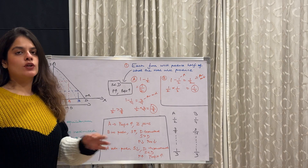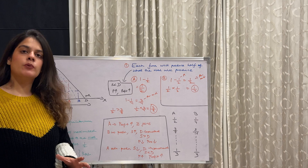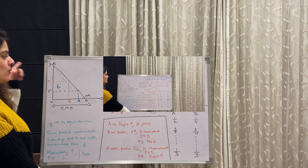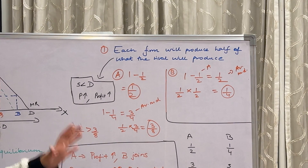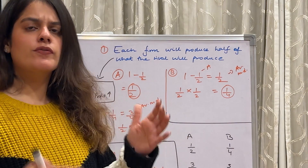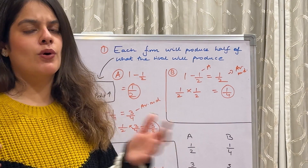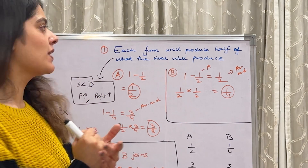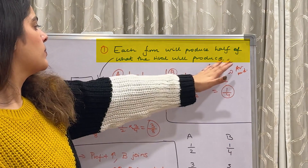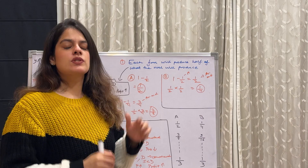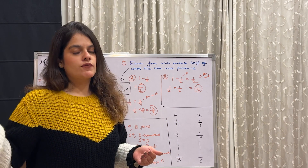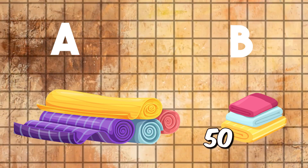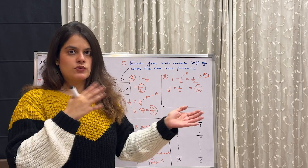Now the most important part — the crux of the whole model. One key assumption is that each firm will produce half of what remains after the rival has produced. So if we assume the entire market demand is 1, firm A is going to produce half of the market demand. One minus half gives us one half — so A produces one half. This is one big assumption to keep in mind: if A is producing 100, B is going to produce 50, that is, half of what A produces.